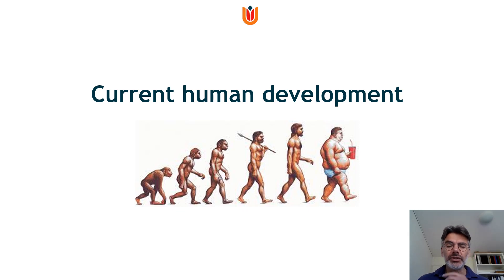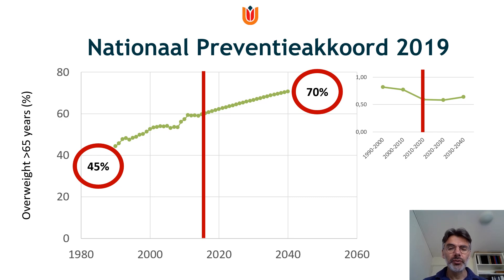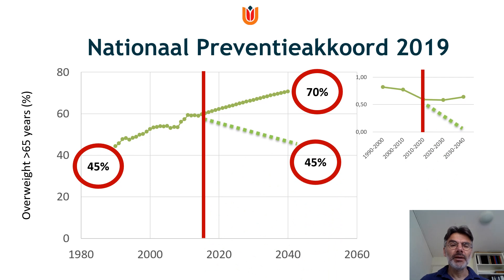Current human development shows an increase in obesity. In the Netherlands, data from 2012 show overweight is at 50% at the population level. The elderly are at about 60%, and recent data show that by 2040, 70% of the elderly will be overweight — which is actually the current mean level of overweight in the United States. This is a major health threat, and the National Prevention Accord has set a goal to reduce the incidence of overweight, which will be a very difficult task but will also contribute to cancer prevention.